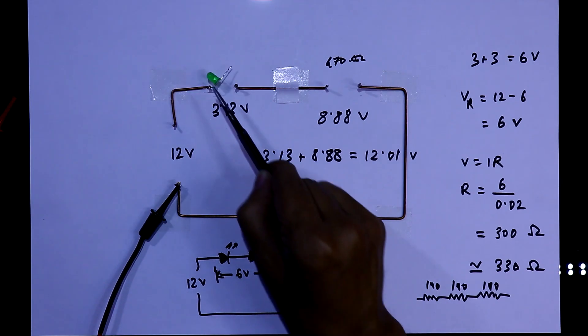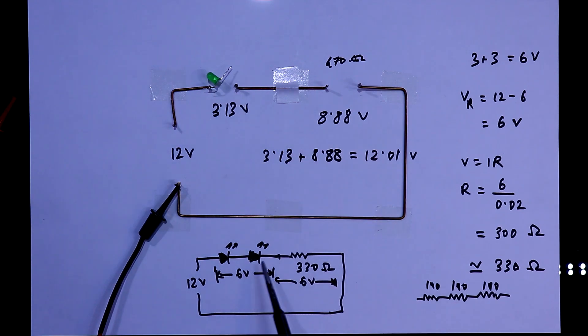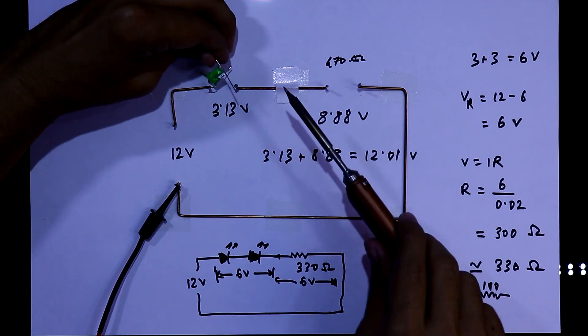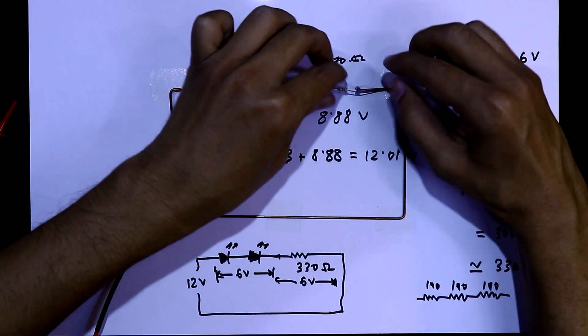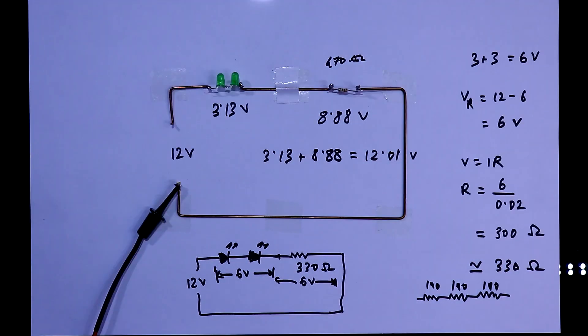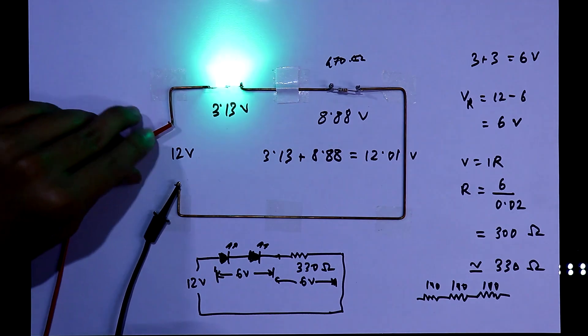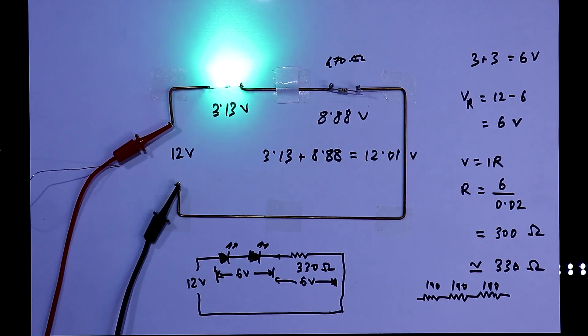This pin is positive and this is negative. For the second LED, the positive will be connected with this negative. And the negative is connected here. So I will connect the negative in this. So the resistor and the LEDs are connected. Now I am connecting the 12V power supply. Here both the LEDs are glowing.